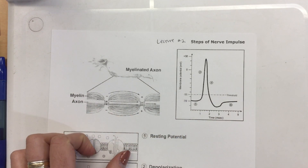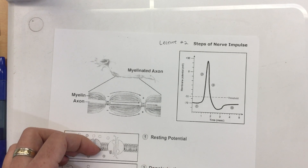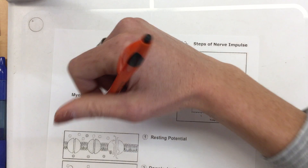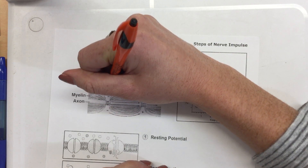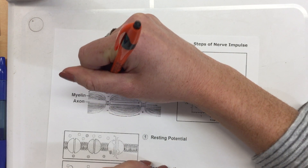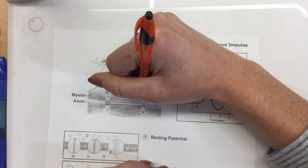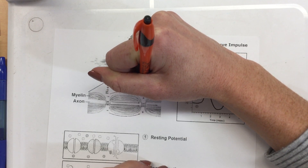So we're going to start with labeling the nodes. How many nodes of Ranvier do we have here? Two. Yeah, so we're going to label the first one, node one, and the second one, node two.